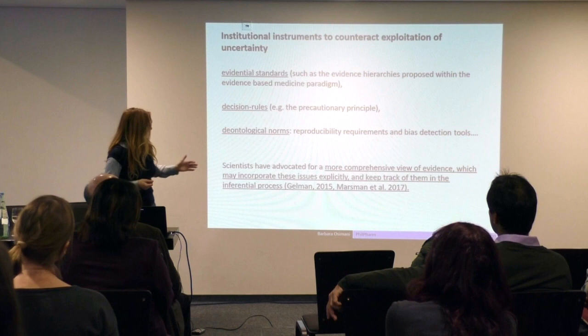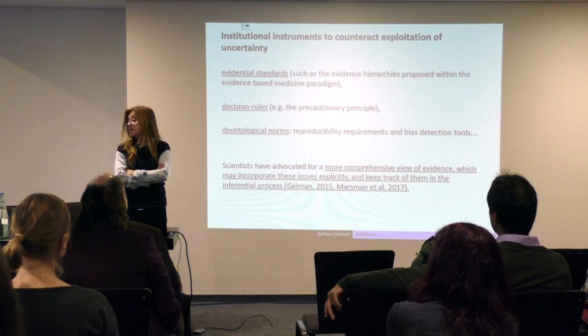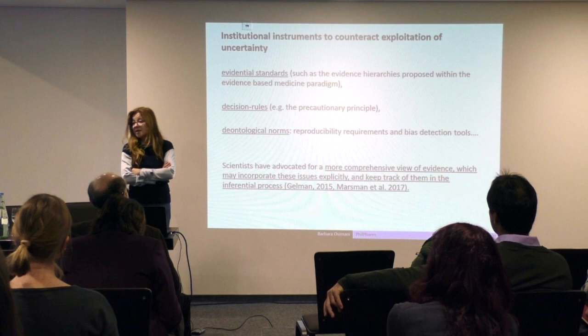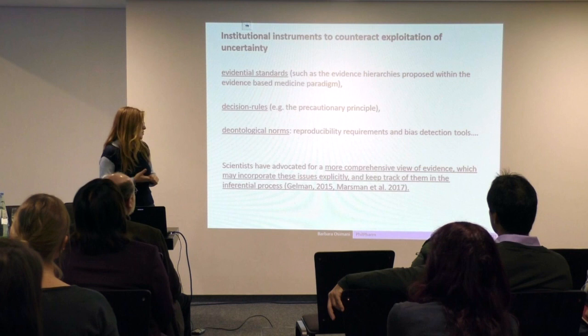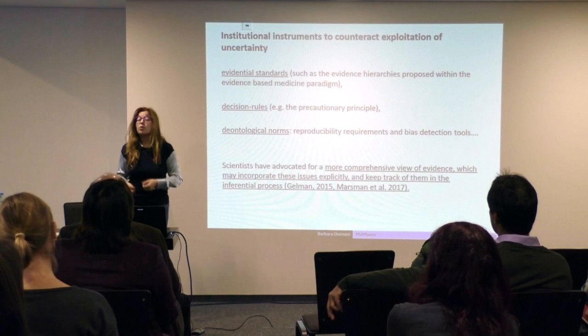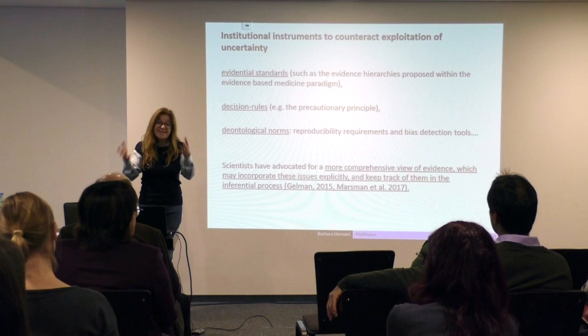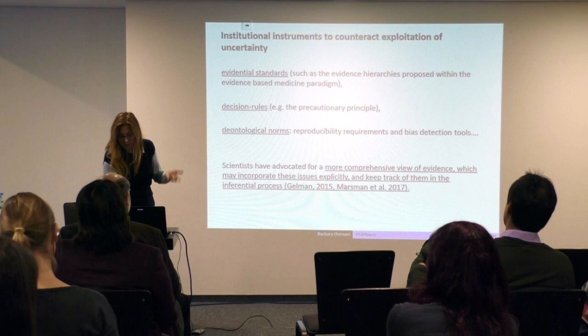Andrew Gelman advocates for a reconciliation of frequentism and Bayesianism, and for a broad view on evidence that takes into account higher-order evidence — such as evidence about evidence, or knowledge about the procedures we use — and to track them and take them into account in your comprehension of the process.